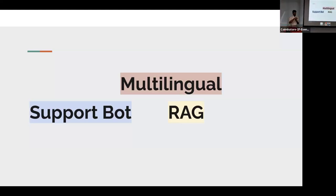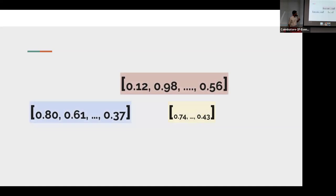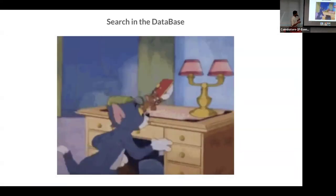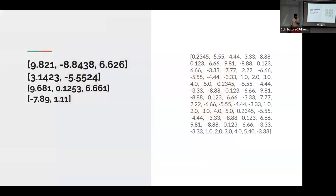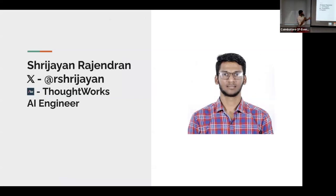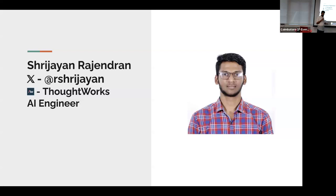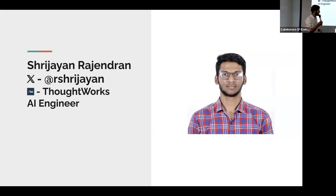To see the teaser of our whole session, it will be converting all your text — whatever you have as a question — into numbers. Those numbers will be searched in a database. After searching, the database gives us back some numbers, and if we get meaningful insights, we can change them into a meaningful output. I will explain each and every concept: how to convert text to numbers, numbers to searching in a database — everything hands-on. Let me introduce myself. I am Sri Jayan Rajendran, working as an AI engineer at ThoughtWorks. Let's start going into the topic.